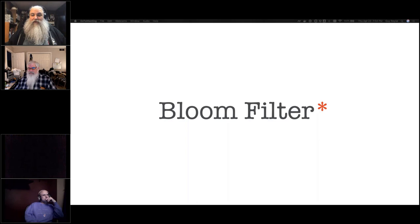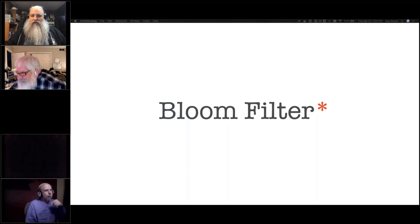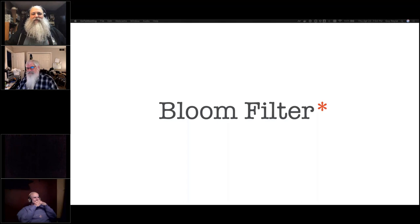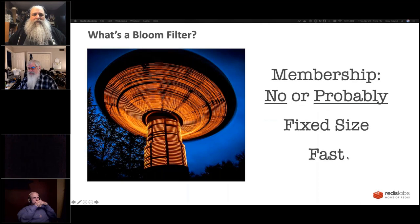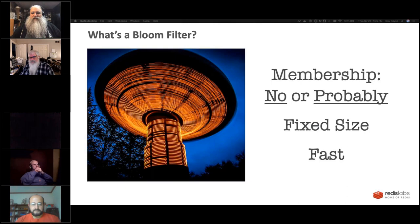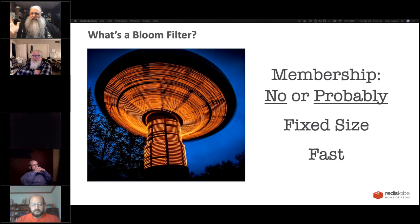The first one we're going to cover is bloom filters. Bloom filters determine membership, but they sometimes provide false positives. If you ask a bloom filter whether something is in it, it will say either 'definitely not' or 'probably yes.' They are fixed size when you create them — you create a bloom filter of whatever size is appropriate. They're super fast — modifying and querying a bloom filter is an O(1) operation.